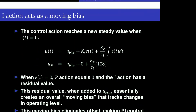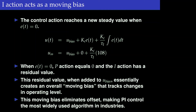At steady state, the proportional term is zero and the integral term has a value of kc/tau_i times 108 — represented by the area under the curve. This residual value is added to u_bias, effectively adding a moving bias that tracks the change in the operating level.